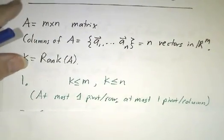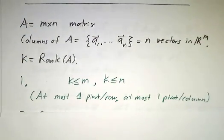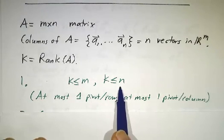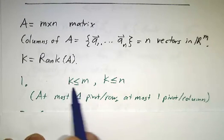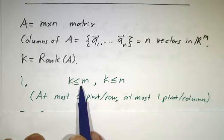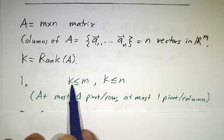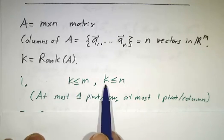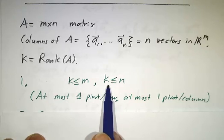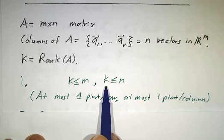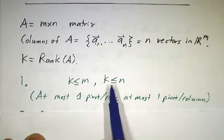The first thing to note is that the rank can never be bigger than m and it can never be bigger than n. After all, you can only have one pivot in a row—the pivot is the first non-zero entry—so you can't have more pivots than rows. You can't have more than one pivot in a column because each pivot has to be to the right of the previous one, so you can't have more pivots than columns.